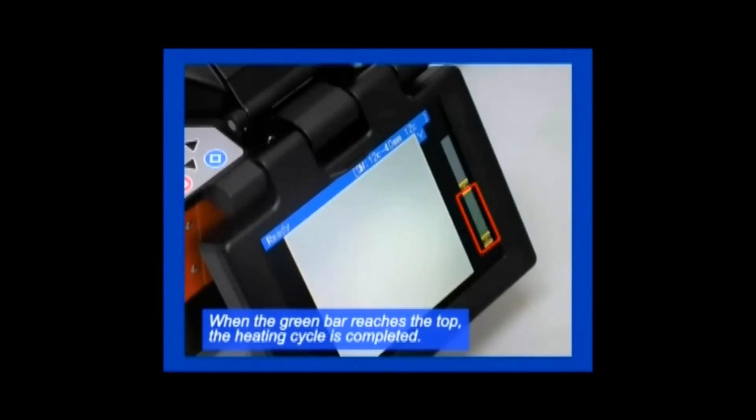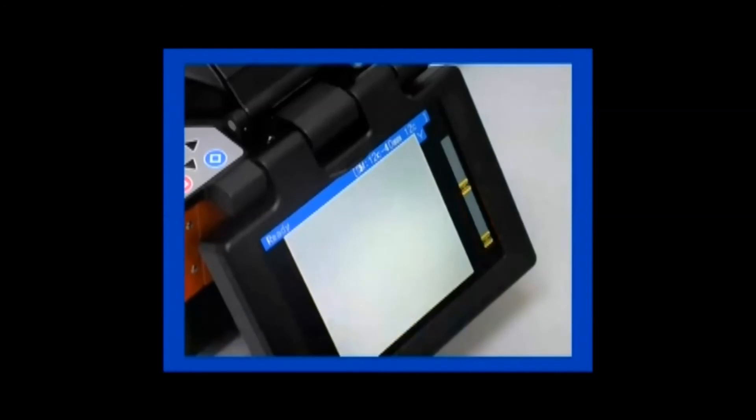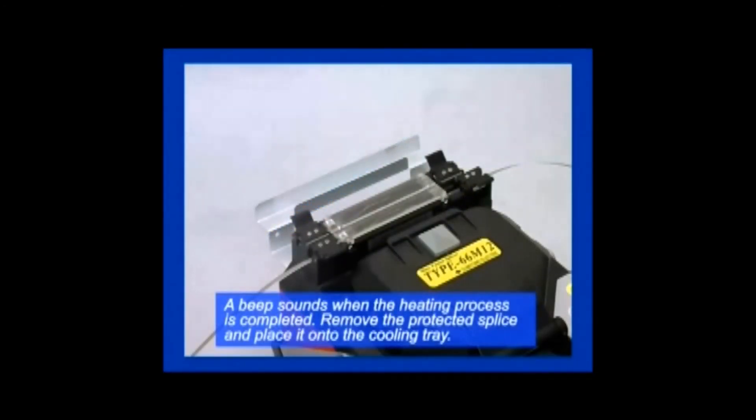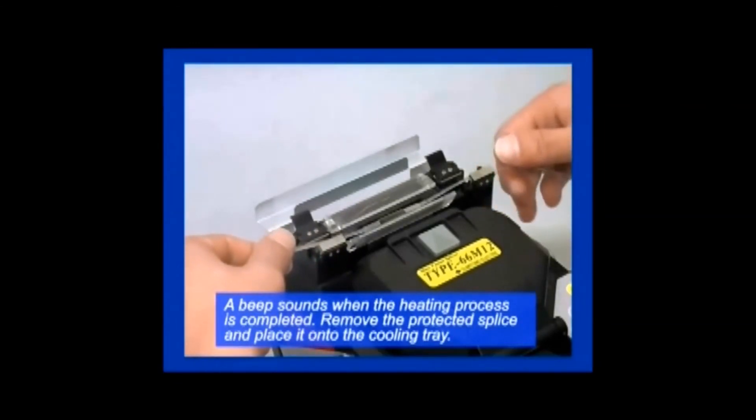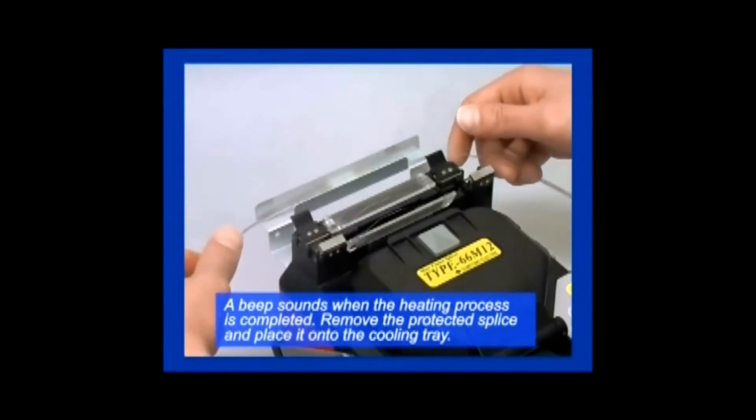A beep sounds when the heating process is completed. The protected splice is then removed and placed into a cooling tray. This completes all of the work required to splice 12 fibers in only a few minutes with a typical splice loss of less than two one-hundredths of a dB.